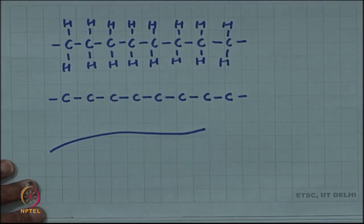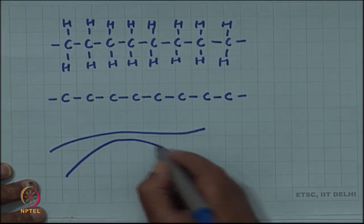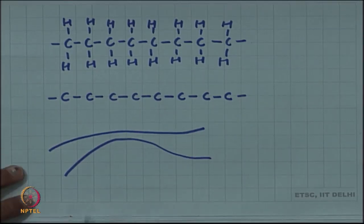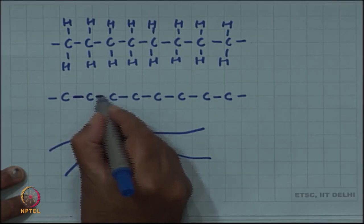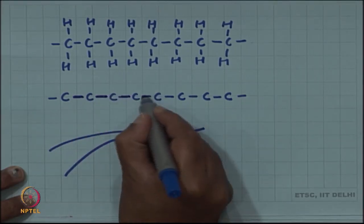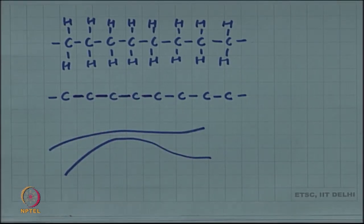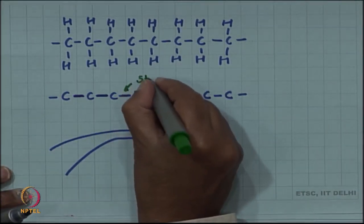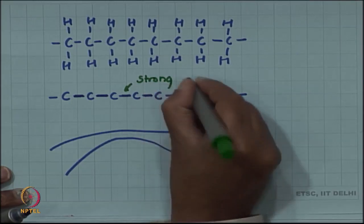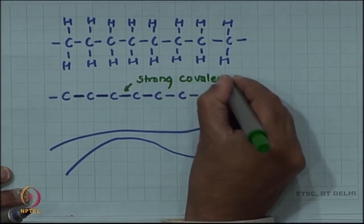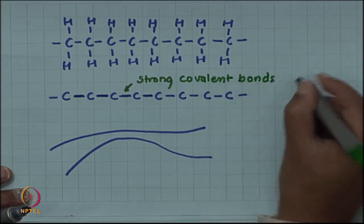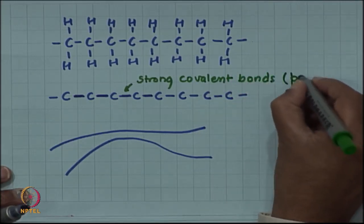This is one polymer chain and there can be another polymer chain in the same sample. So, this is chain one, this is chain two. Within the chain we are seeing that carbon-carbon bonds are all covalent bonds, these are strong covalent bonds.